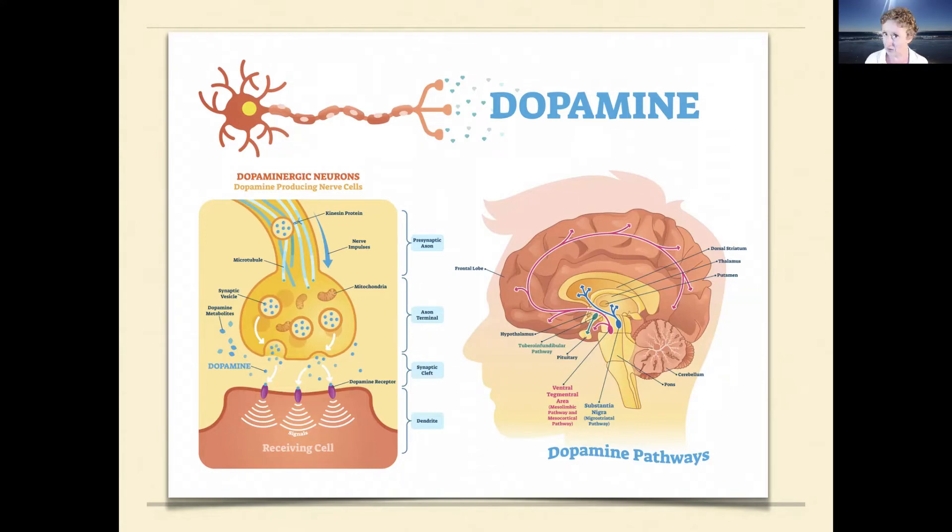So we might find ourselves reaching for external sources of dopamine. So things like alcohol and drugs give us a dopamine hit. So that might explain the fact that in the creative professions, there is anecdotal and research literature that shows we have a greater prevalence of addiction in our population. So this may be one of the reasons why biologically, we're essentially dopamine hungry. So we look for it from outside of ourselves.